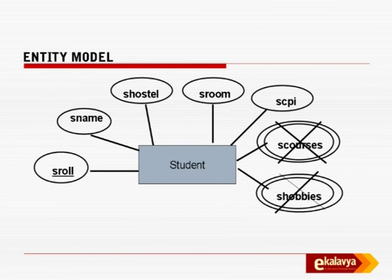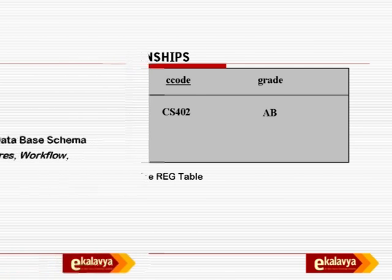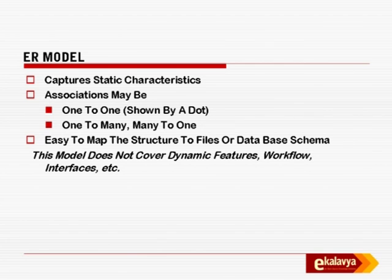For static data you have the entity model — you are all familiar with this. We eliminate multi-valued attributes, identify primary keys, and so on. You look at table representations as samples to know what kinds of values will typically occur. You set up relationships with attributes for relations, and figure out what else is required. The ER model captures static characteristics, associations which can be one-to-one or one-to-many, and is easy to map to files or database schema. However, this model does not cover dynamic features, workflow, and interfaces.